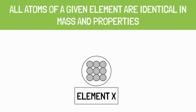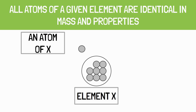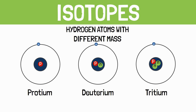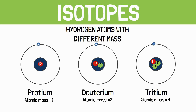Postulate number two: all atoms of a given element are identical in mass and properties. It is generally seen that atoms of the same elements have the same chemical and physical properties. But atoms of the same element are not always alike. Now we know about isotopes — elements with the same atomic number but different atomic masses. For example, protium, deuterium and tritium are three isotopes of hydrogen with atomic masses 1, 2 and 3 respectively. So atoms of the same element can have different mass and properties.